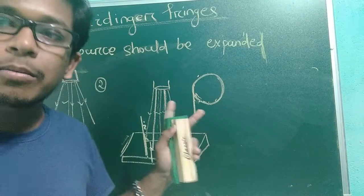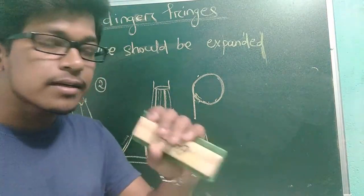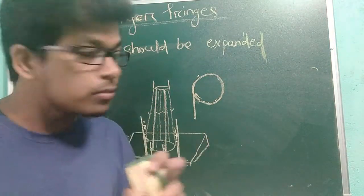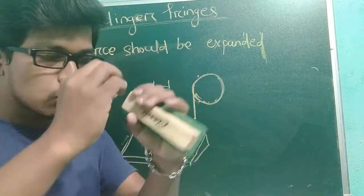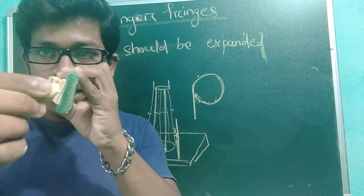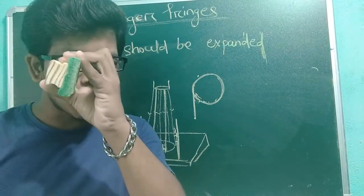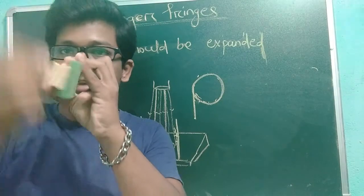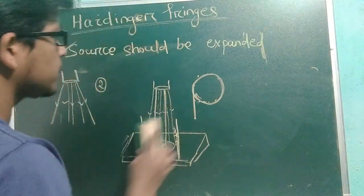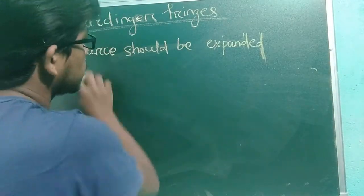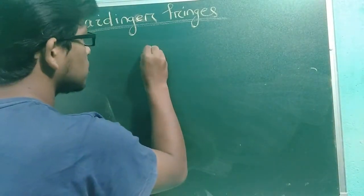To get rid of such problems - the problem being that we are not able to see the fringes because light rays are going far apart and not coming to the eyepiece - the eyepiece can only observe light that enters it, but the light is going outside. That's why we are not observing the fringes.